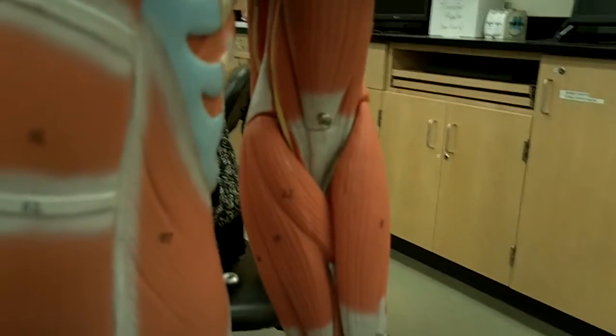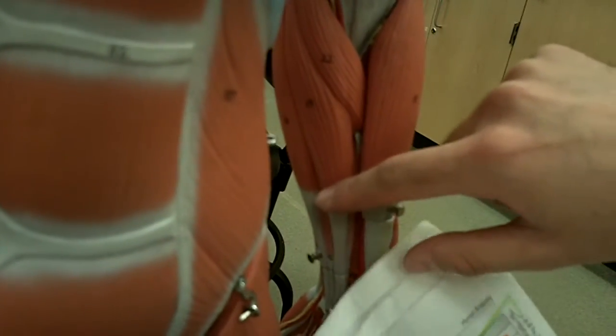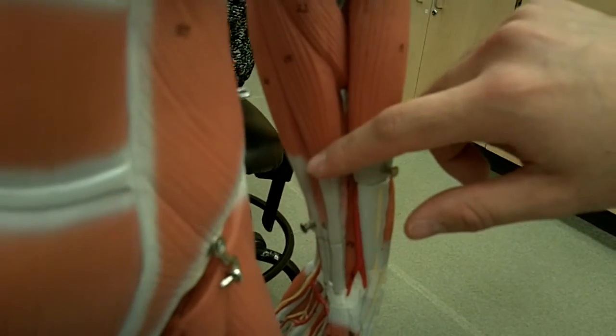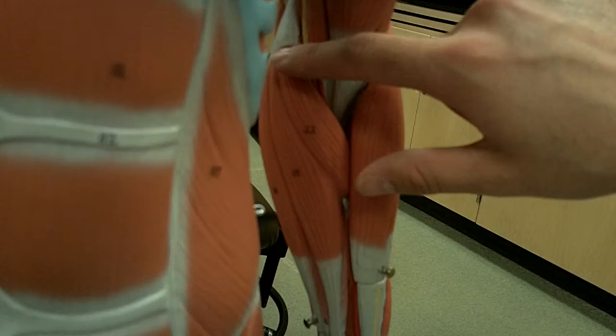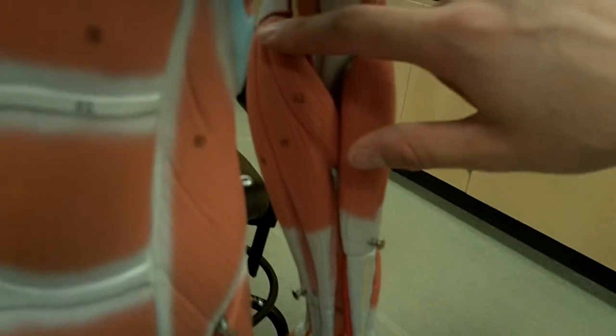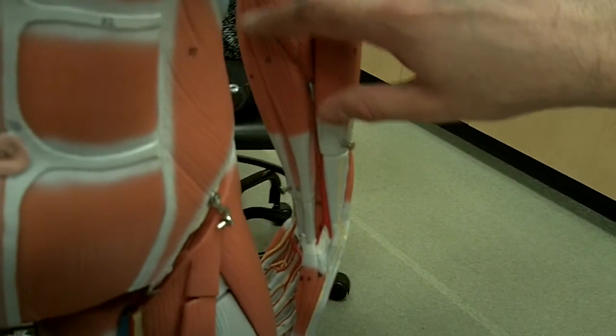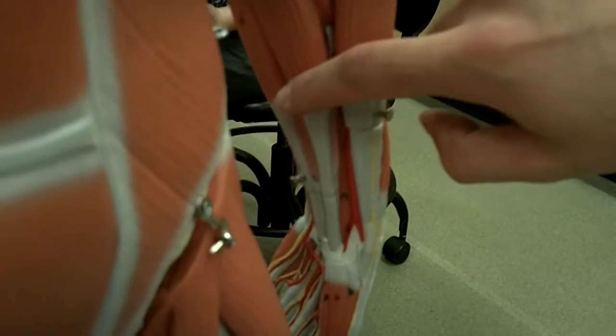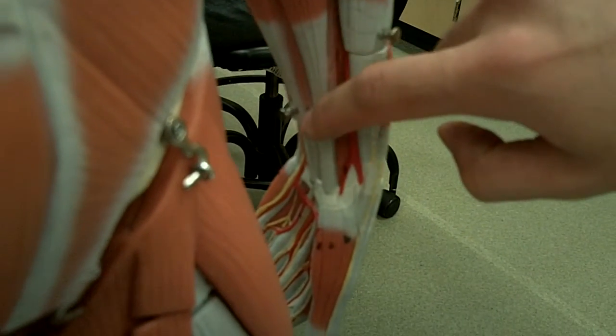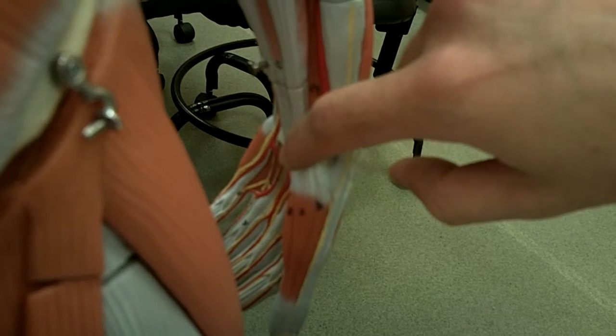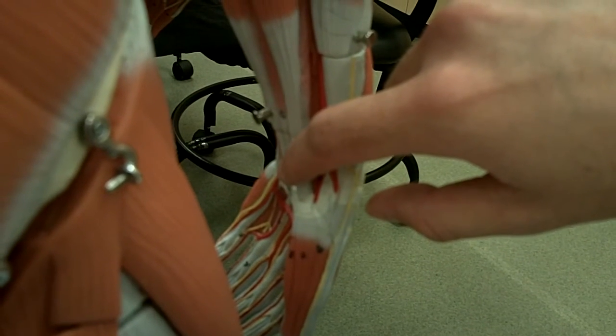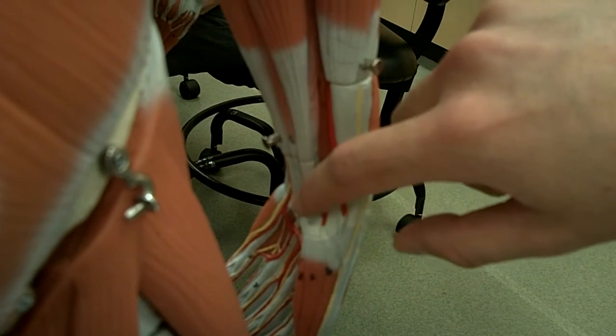Here we have muscles that position the hand and fingers, part of your upper extremity. We start with the flexor carpi radialis. This originates on the medial epicondyle of the humerus, in this area here, the medial part of the humerus. It inserts on the base of metacarpals two and three. This muscle's action flexes and abducts the wrist.